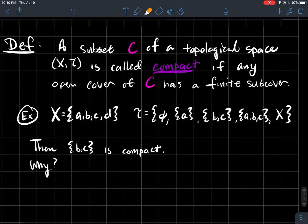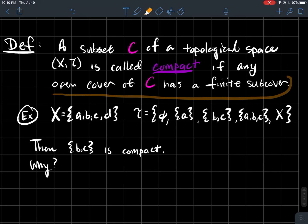I claim that this subset, B, C, is compact, that it satisfies this definition. And I picked this just so I can talk about what does this mean up here. So why is B, C compact?